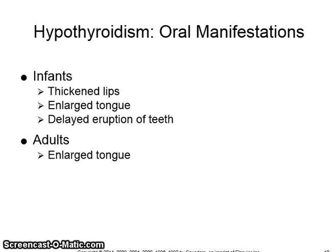Oral manifestations of hypothyroidism: in infants, thickened lips and enlarged tongue. In adults, delayed eruption of teeth and enlarged tongue.